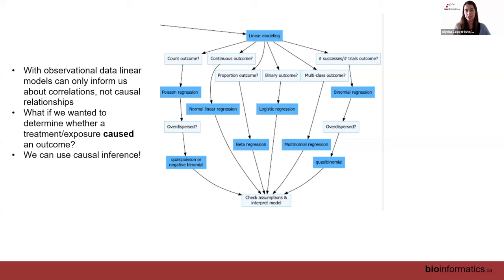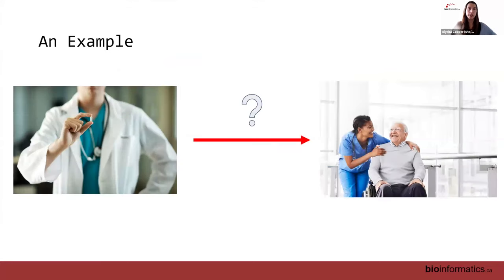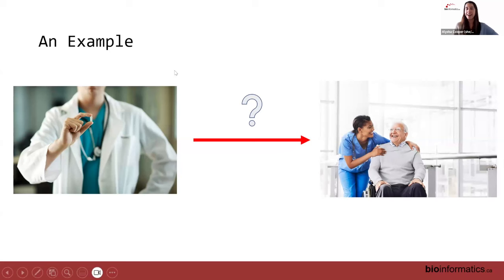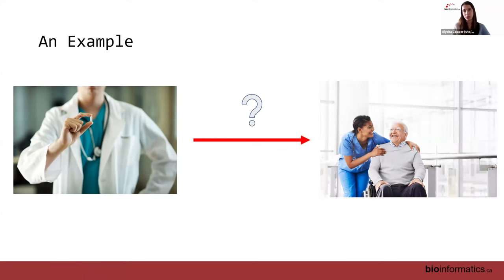An example: say we work in a hospital and there's a new cancer treatment said to reduce symptoms enough that a patient can be discharged. Ideally we'd set up a randomized experiment, but in clinical studies some people need the treatment more than others, so we can't ethically justify withholding it. The issue then becomes that what makes individuals more likely to receive treatment might also be impacting the outcome — and that is when we could use a causal inference approach.